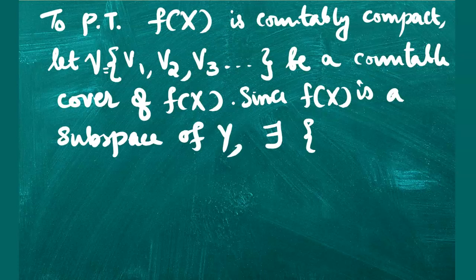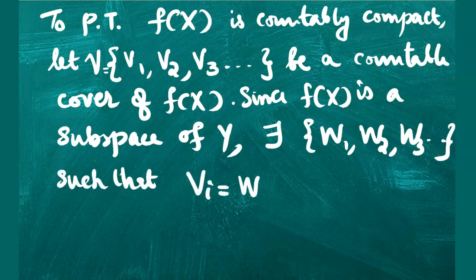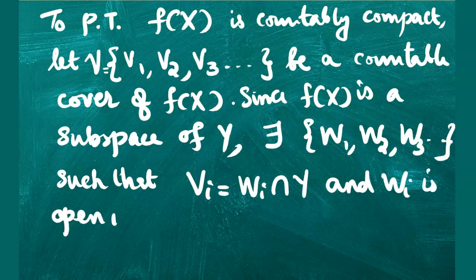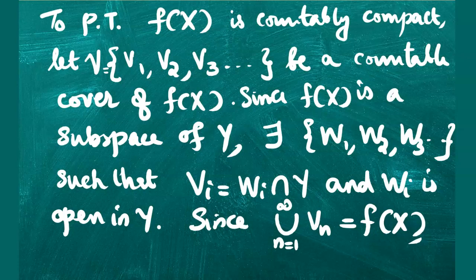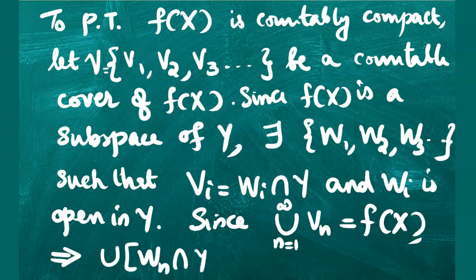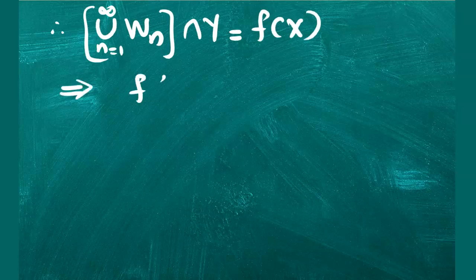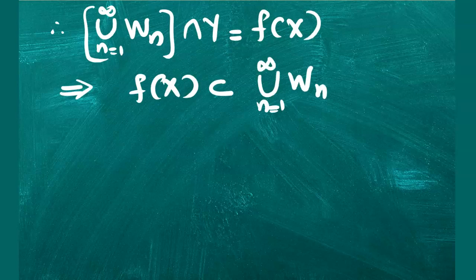To prove that f(X) is countably compact, consider an arbitrary countable open cover of f(X). Since f(X) is a subspace of Y, there exists a family {W1, W2, W3, ...} such that Vi = Wi ∩ Y where Wi is open in Y, using the definition of subspace topology. Since the family {V1, V2, V3, ...} covers f(X), the union of sets of the form Wn ∩ Y covers f(X), which implies f(X) is contained in the union of these sets Wn.